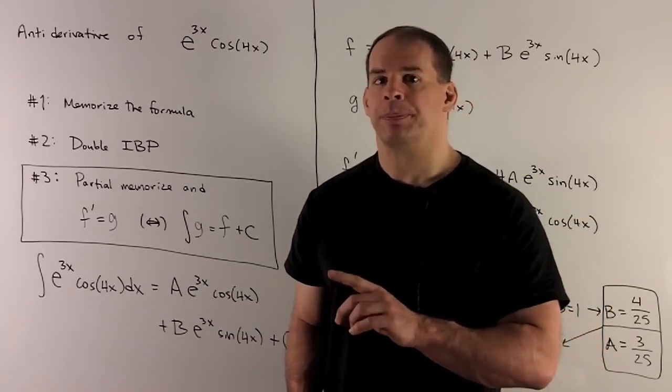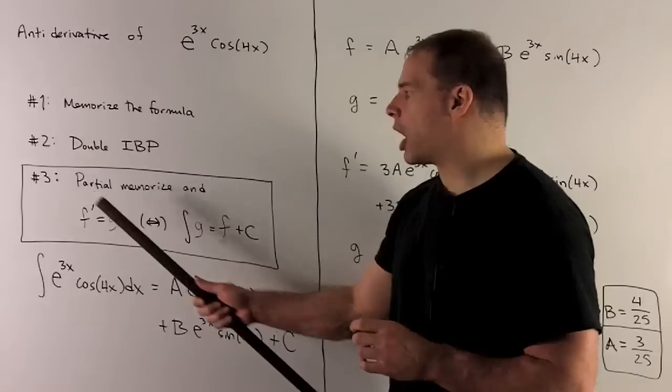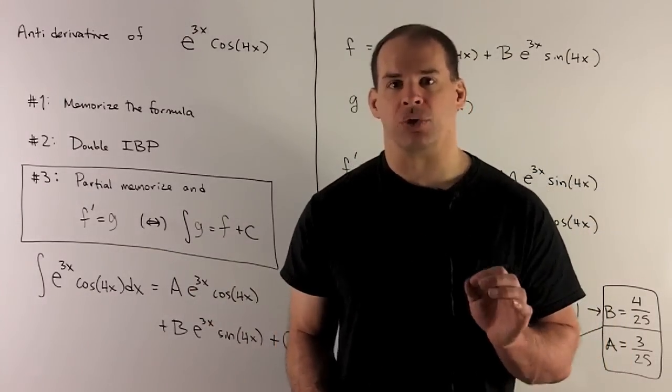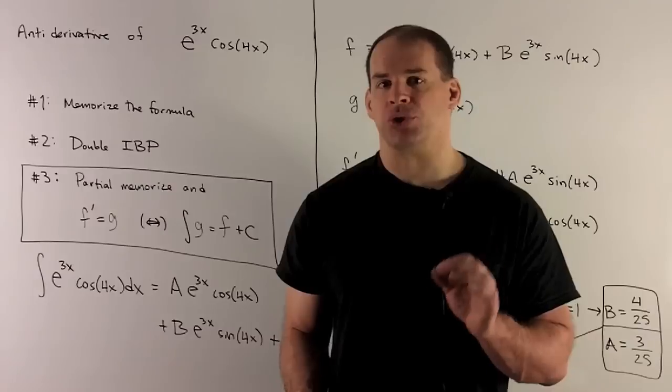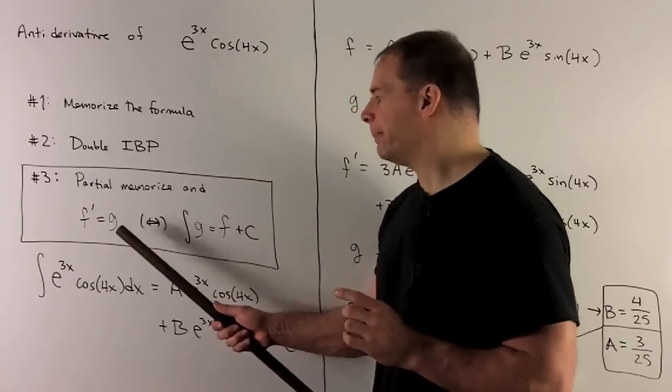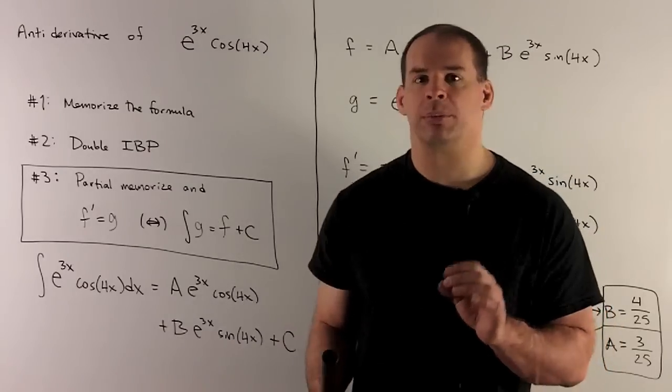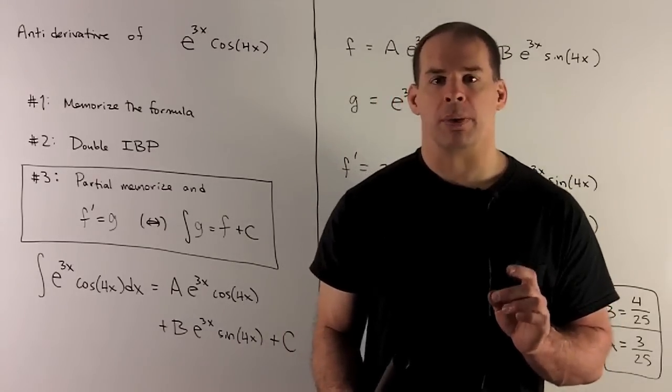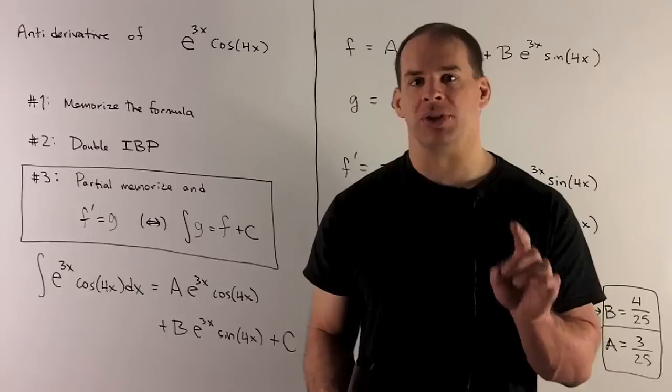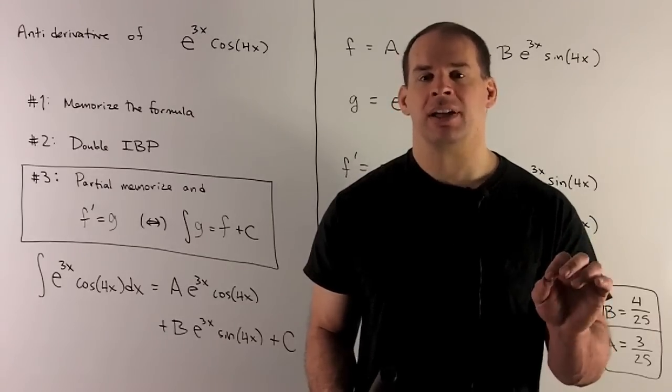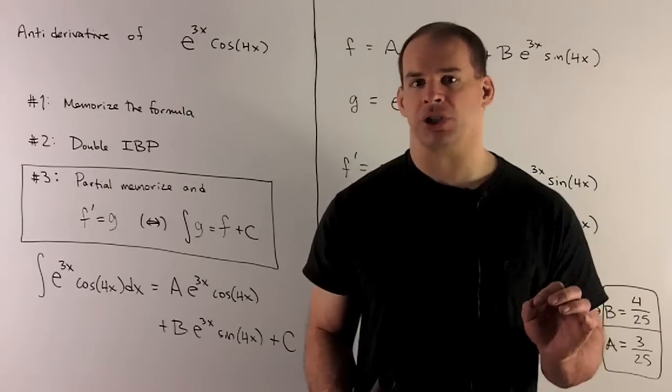For a third method, what we're going to do is partially memorize our answer, and then we'll use the definition of antiderivative. If we have the derivative of f is equal to g, it's the same as saying the antiderivative of g is equal to f plus a constant. The trick we're going to use is what we normally do when we check our work. We'll have an answer, take its derivative, and then that's going to be equal to your original function.